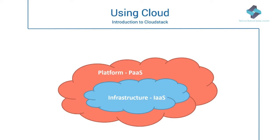The second model is Platform as a Service (PaaS). PaaS offers a development environment to application developers. In this model, the cloud provider typically develops toolkits and standards for development and channels for distribution and payment. Cloud providers deliver a computing platform typically including operating system, programming language execution environment, databases, web servers, etc. Some examples of PaaS are AWS Elastic Beanstalk, Azure Websites, etc.